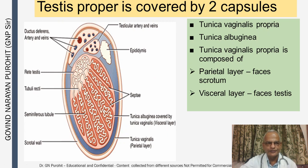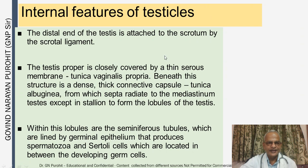The testis proper is covered by two capsules: the tunica vaginalis propria and the tunica albuginea. The tunica vaginalis propria is composed of the parietal layer facing the scrotum and the visceral layer facing the testes. The distal end of the testes is attached to the scrotum by the scrotal ligament. Beneath the tunica vaginalis propria is the dense connective tissue capsule, the tunica albuginea, from which septa radiate to the mediastinum testes — except in the stallion — to form the lobules of the testes.